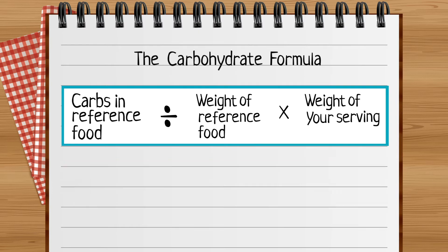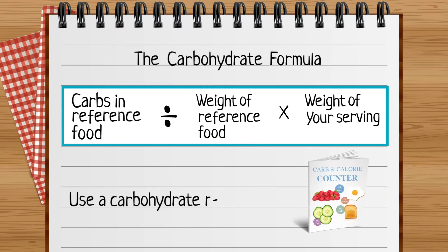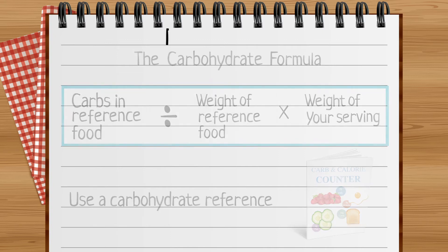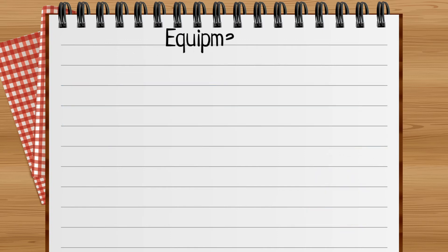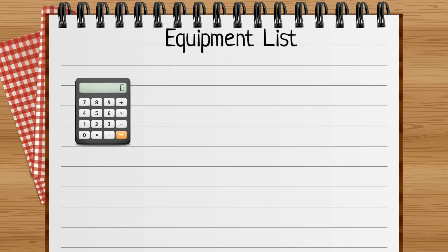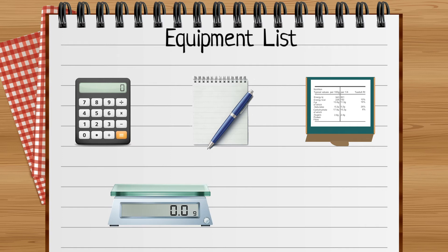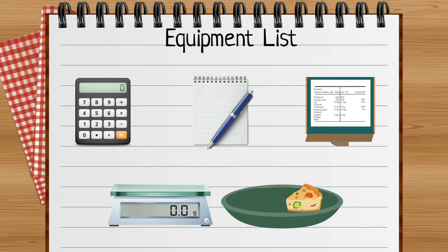In this calculation we need two pieces of information from a carbohydrate reference. To do the calculation you will need a calculator, a notepad and pen, the food label, digital scales, and the food you want to eat.